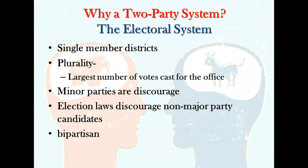Much of American electoral law is purposely written to discourage non-major party candidates. Republicans and Democrats regularly act in a bipartisan way — they find common ground and work together to deliberately shape election laws to preserve, protect, and defend the two major parties and frustrate minor parties. In most states, it is far more difficult for minor parties and independent groups to get their candidates listed on the ballot than for the major parties.